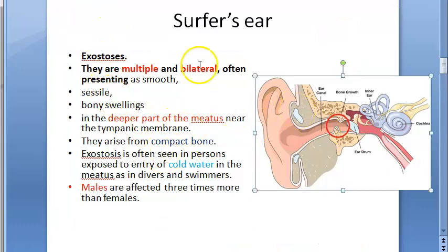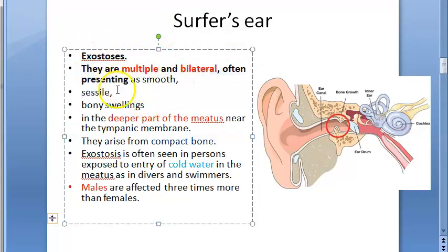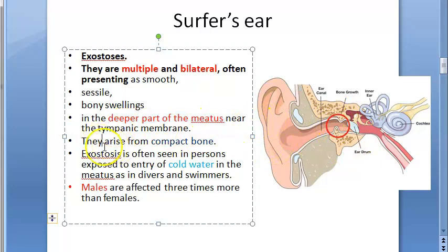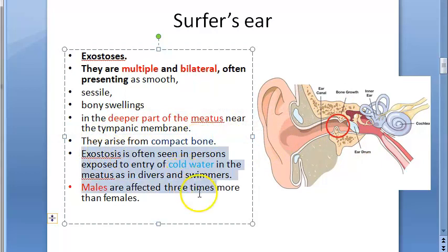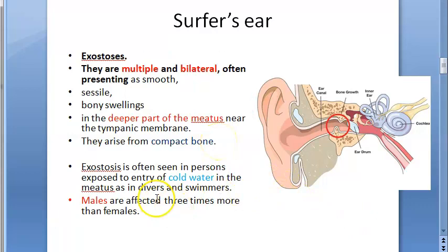To summarize so far: surfer's ear, also called exostosis, presents as multiple bilateral smooth sessile bony swellings in the deeper part of the meatus near the tympanic membrane. They arise from compact bone and are seen in people exposed to cold water in the meatus, such as divers and swimmers.